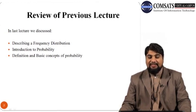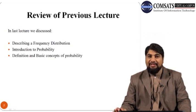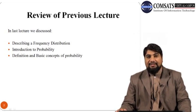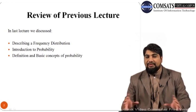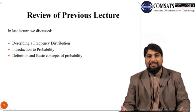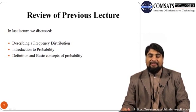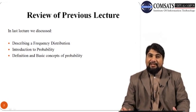First, we take a review of the previous lecture. In the last lecture, we discussed how to describe a frequency distribution using five elements: number one, total number of observations; number two, the measure of central tendency such as mean, median, and mode; number three, measure of dispersion such as variance and standard deviation; number four, skewness, which measures lack of symmetry — whether the distribution is equally or unequally spread around the mean value; and number five, kurtosis, which measures the peakedness of the frequency curve. Using these five elements, we can describe the basic features of any dataset.